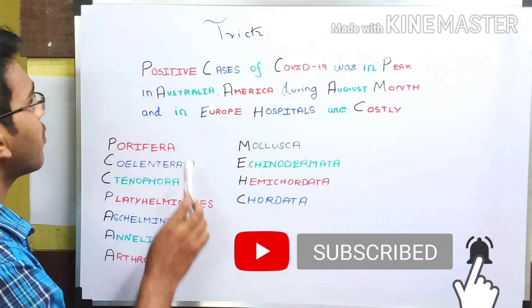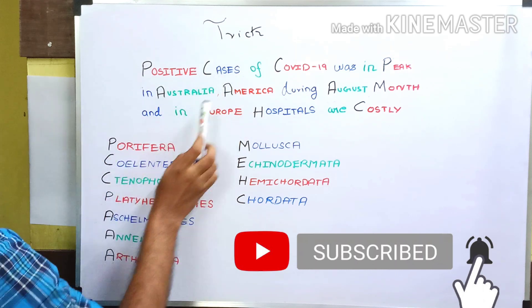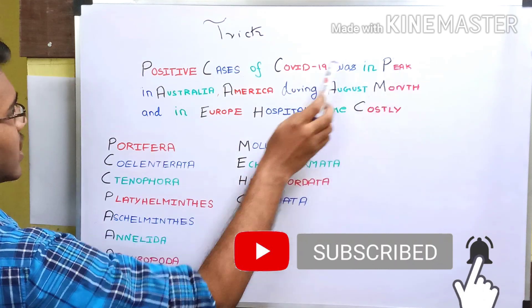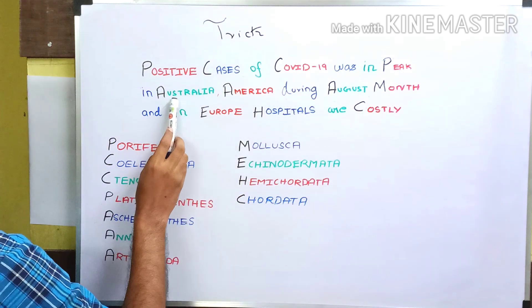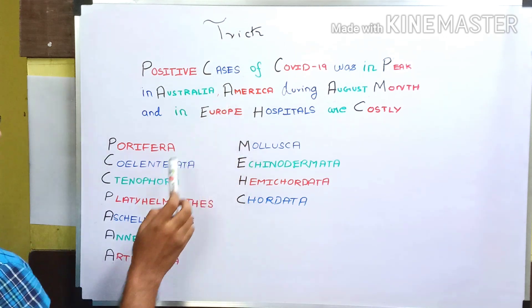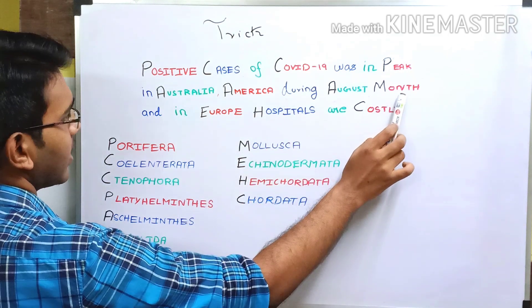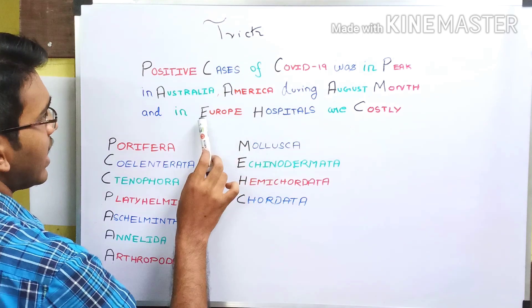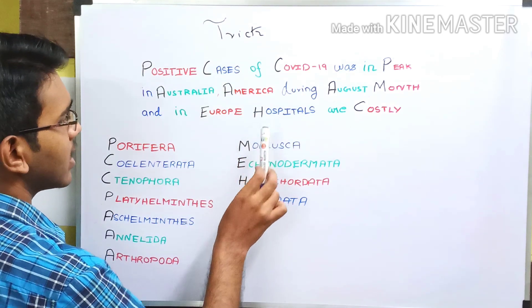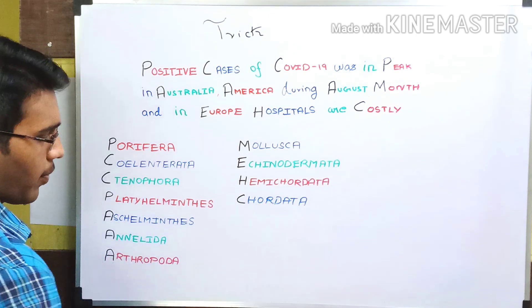Breaking down the mnemonic: P of 'positive' refers to Porifera; C of 'cases' refers to Coelenterata; C of 'COVID' refers to Ctenophora; P of 'peak' refers to Platyhelminthes; A of 'Australia' refers to Aschelminthes; A of 'America' refers to Annelida; A of 'August' refers to Arthropoda; M of 'month' refers to Mollusca; E of 'Europe' refers to Echinodermata; H of 'hospitals' refers to Hemichordata; and C of 'causing' refers to Chordata.